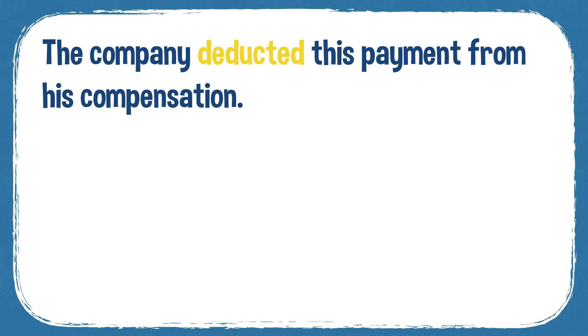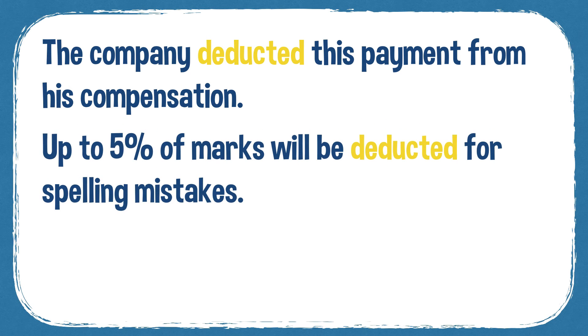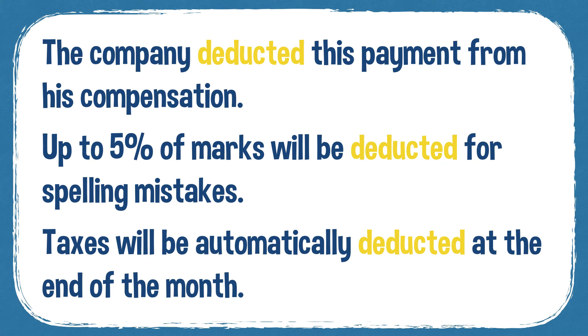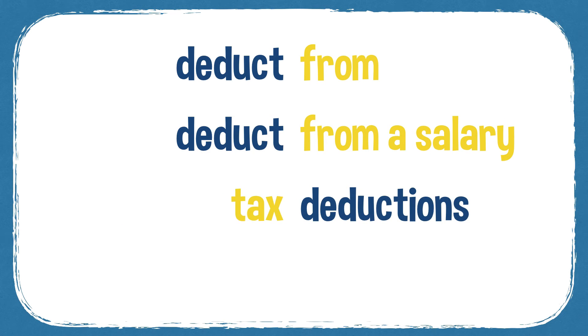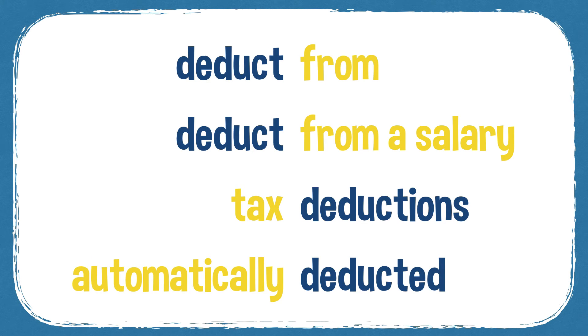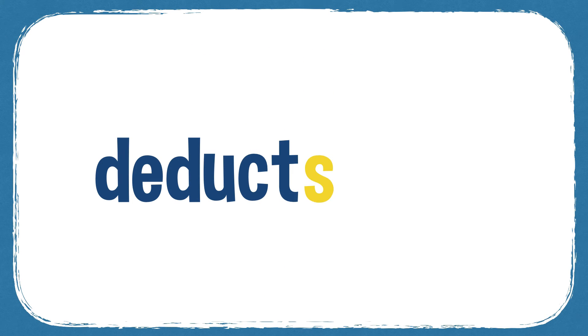Your next word is deduct. When you deduct an amount from a total, you subtract it from the total — you take it away. For example, the company deducted this payment from his compensation; up to five percent of marks will be deducted for spelling mistakes; taxes will be automatically deducted at the end of the month. You can deduct from a salary, and you can have tax deductions. Deduct is a verb — deducts, deducting, deducted — and deduction is the noun. Synonyms: subtract, remove, withdraw.